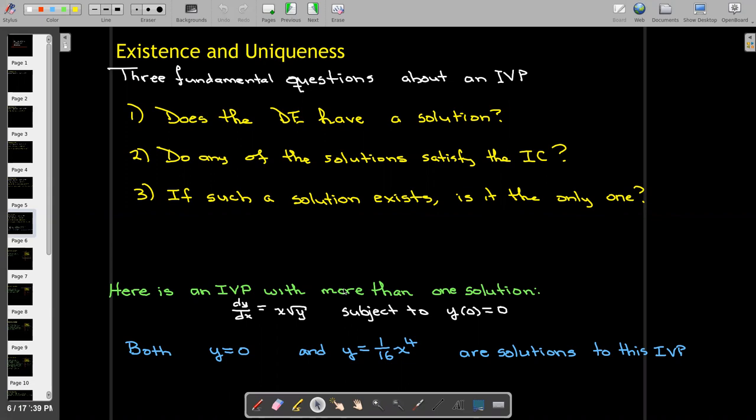Well, both the constant solution y equals zero and y equals (1/16)x^4 are solutions to this IVP. They satisfy the differential equation and the initial condition.